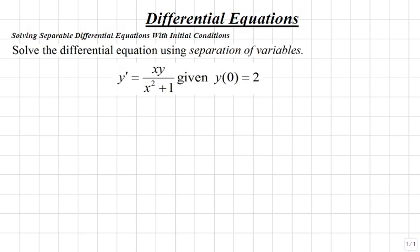Let's solve the following differential equation using separation of variables. We're given y' equals xy over x squared plus 1, with the initial condition that y(0) equals 2. We'll first solve this differential equation and find a general solution, then use our initial conditions to find a specific solution.